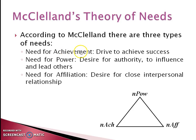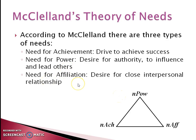The next important need-based theory is McClelland's theory of needs, proposed by McClelland. There are three types of needs: need for achievement, need for power, and need for affiliation. Need for achievement drives individuals to succeed and commit to achieving success. Need for power reflects a desire for authority and to influence and lead others. Need for affiliation reflects the desire for close interpersonal relationships. These are the four major need-based theories; process theories will be discussed in the next lecture.